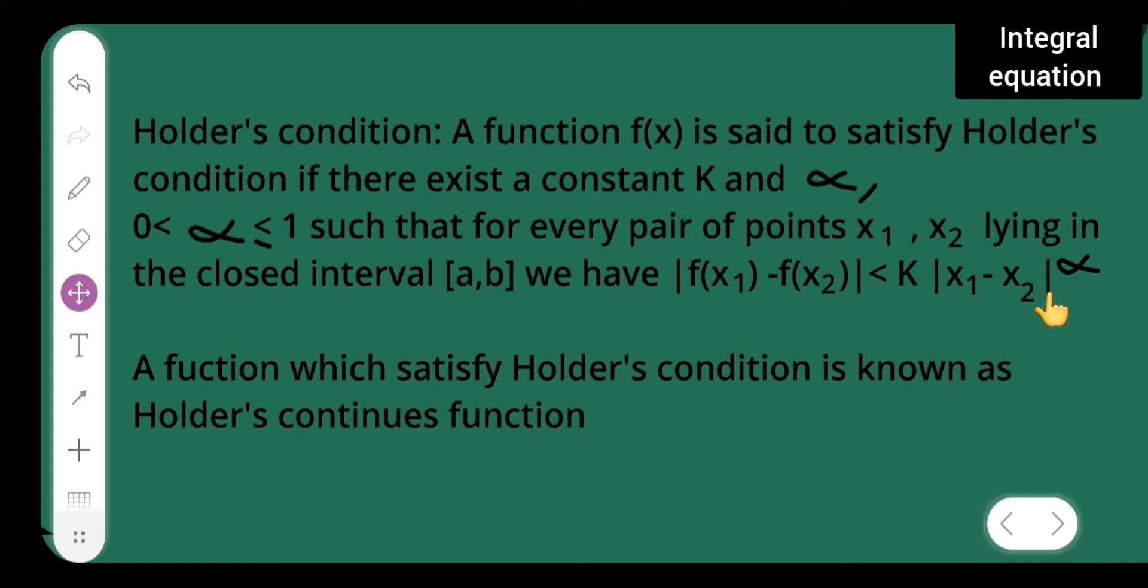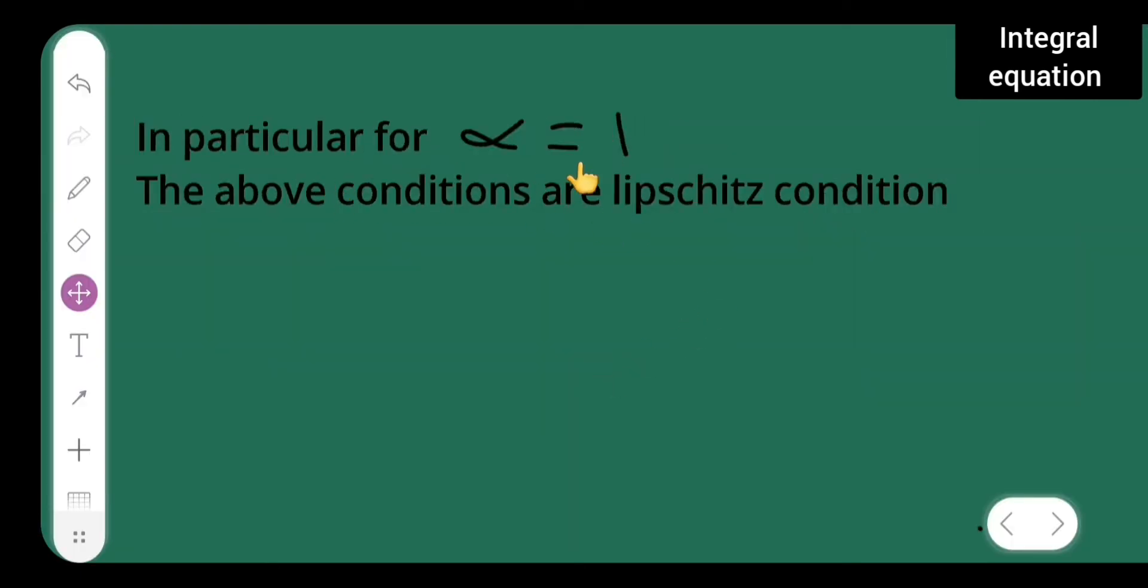In particular if I put alpha equal to 1, the equation will be known as Lipschitz condition. Here, in particular if I put alpha equal to 1, in that condition like how it was |f(x₁) - f(x₂)| which was less than k|x₁ - x₂|. So if I put this alpha to be 1, this will be known as Lipschitz condition.